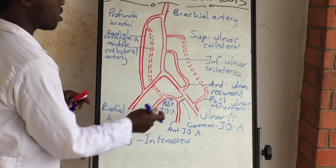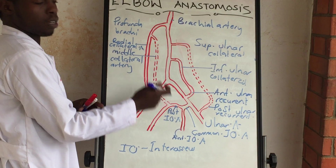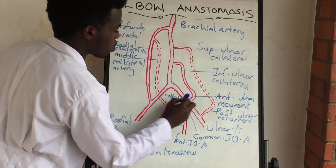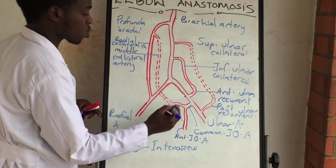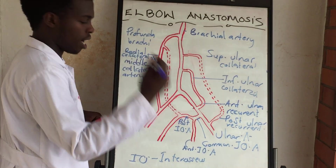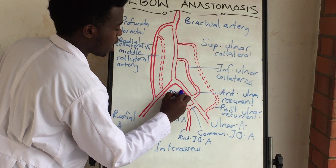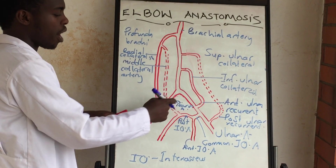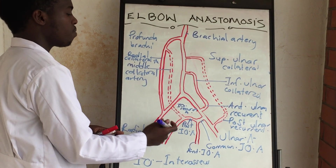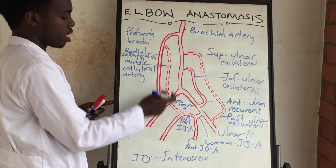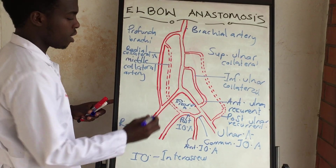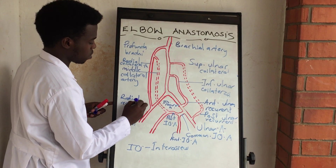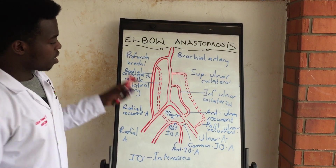The posterior interosseous artery gives off a recurrent branch, which is going to be the interosseous recurrent artery. Then we have the radial artery, which is going to give us an ascending branch. This ascending branch is going to be the radial recurrent artery.